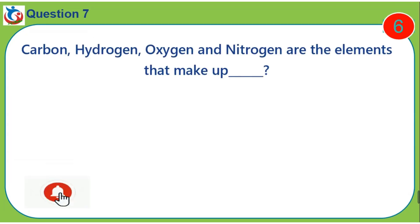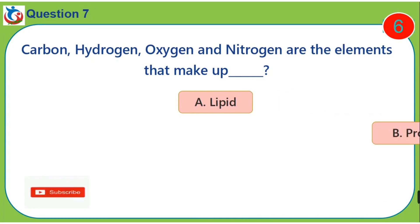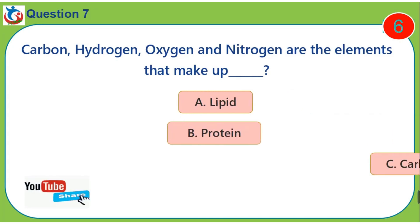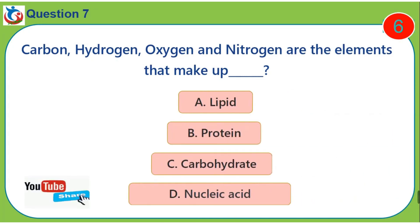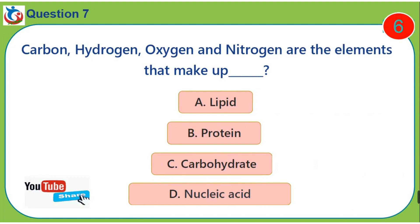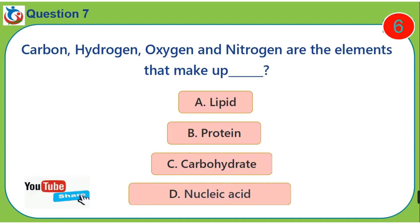Question 7. Carbon, hydrogen, oxygen and nitrogen are the elements that make up dash. A. Lipid. B. Protein. C. Carbohydrates. D. Nucleic acid.